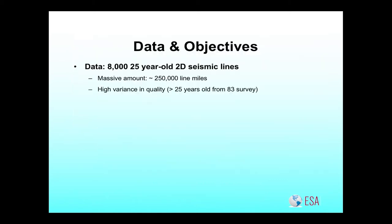Our objective is to take a massive amount of data. There's been work done on salt discrimination that involves just a few lines — a half a dozen lines — and the latest and greatest data. We, on the other hand, took 8,000 lines that cover the Gulf of Mexico. 8,000 lines is about 250,000 miles, basically the distance from Houston to the moon.